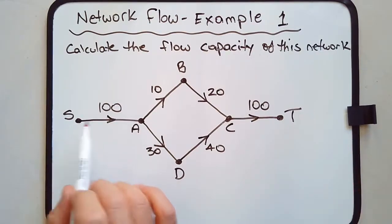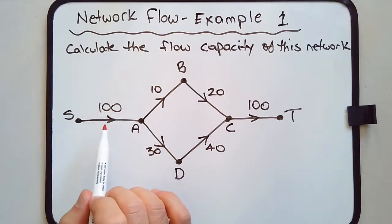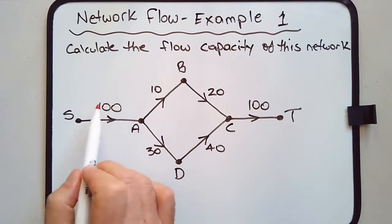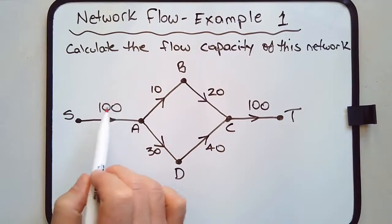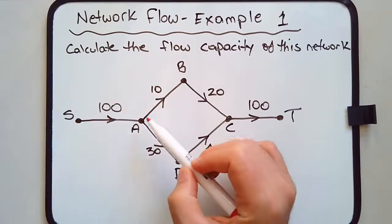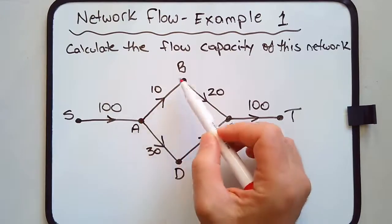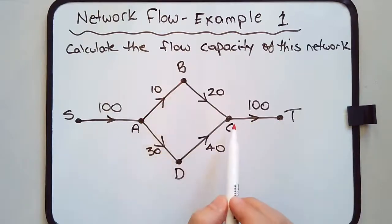Starting from S, the 100 could represent anything. If there's no context given, it might help to think of it in terms of water flow. For example, this could be 100 litres per minute as the capacity of edge SA. The capacity of edge AB is 10 litres per minute, BC is 20, AD is 30, DC is 40, and CT is 100 litres per minute.